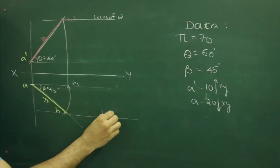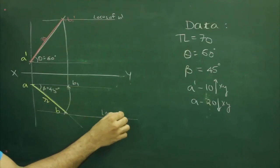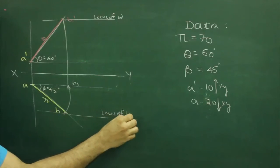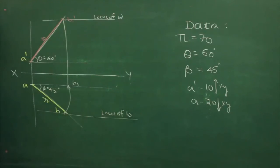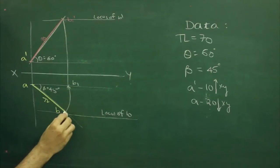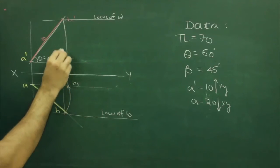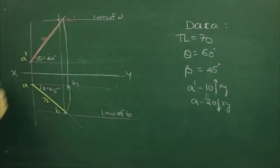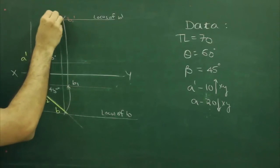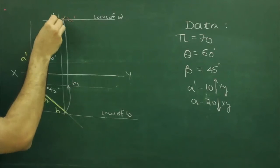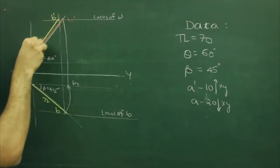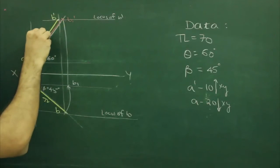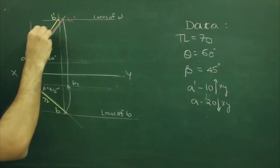Draw the locus of b. After that, project this point b straight up. Wherever it cuts, you can mark that point as b-dash. So that would be your front view.